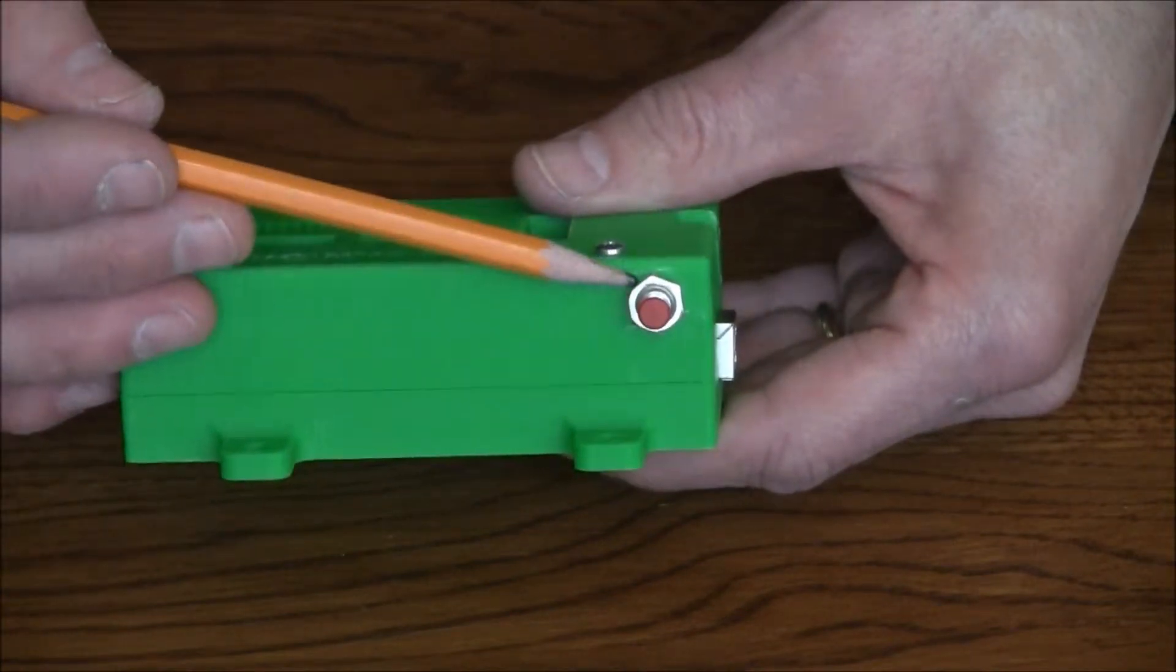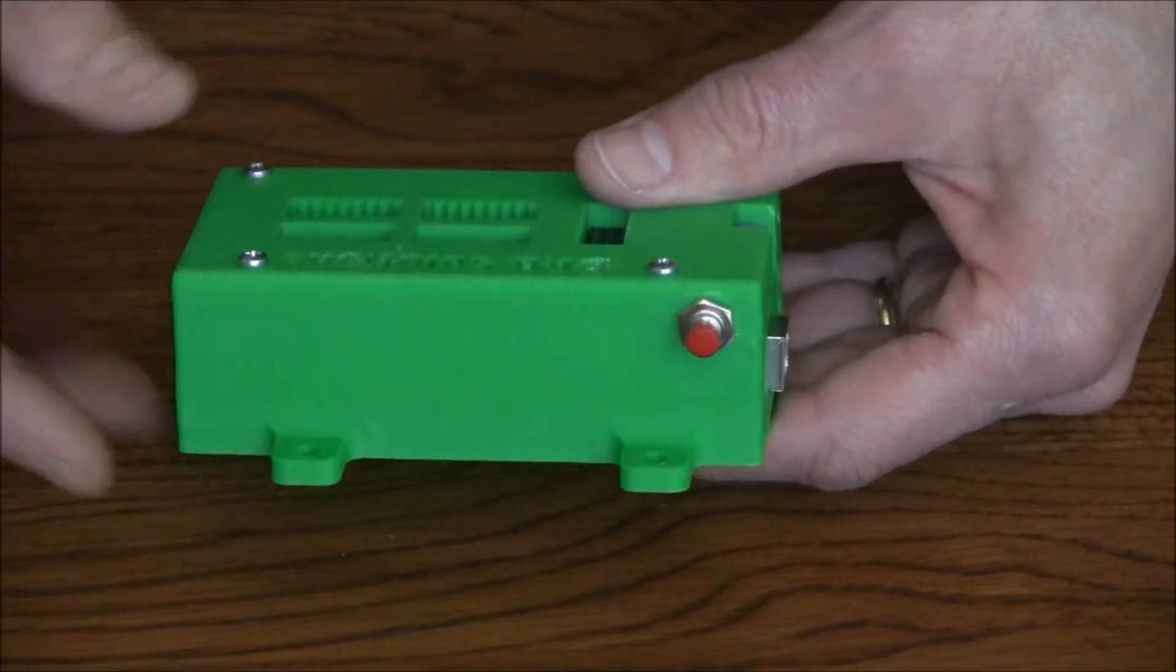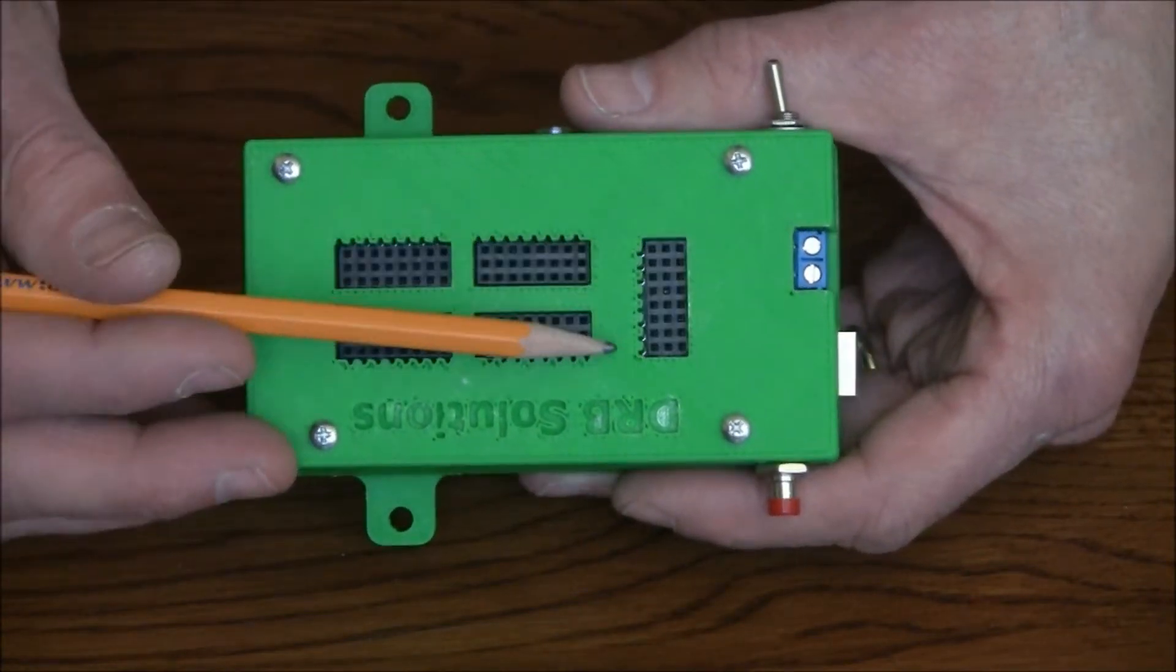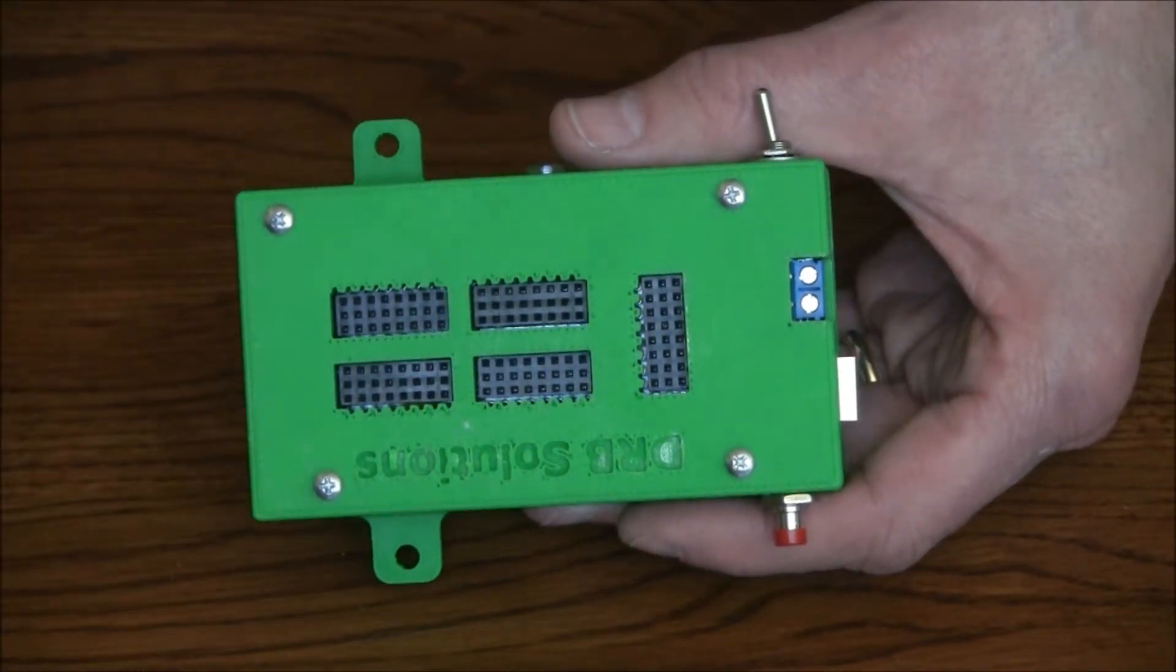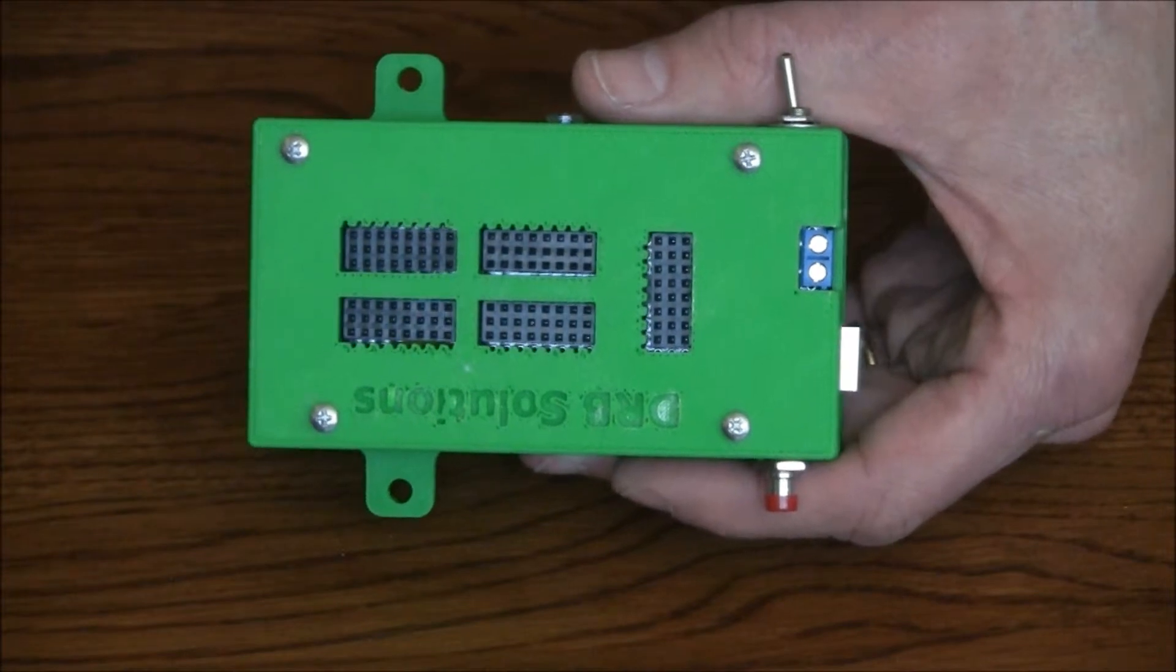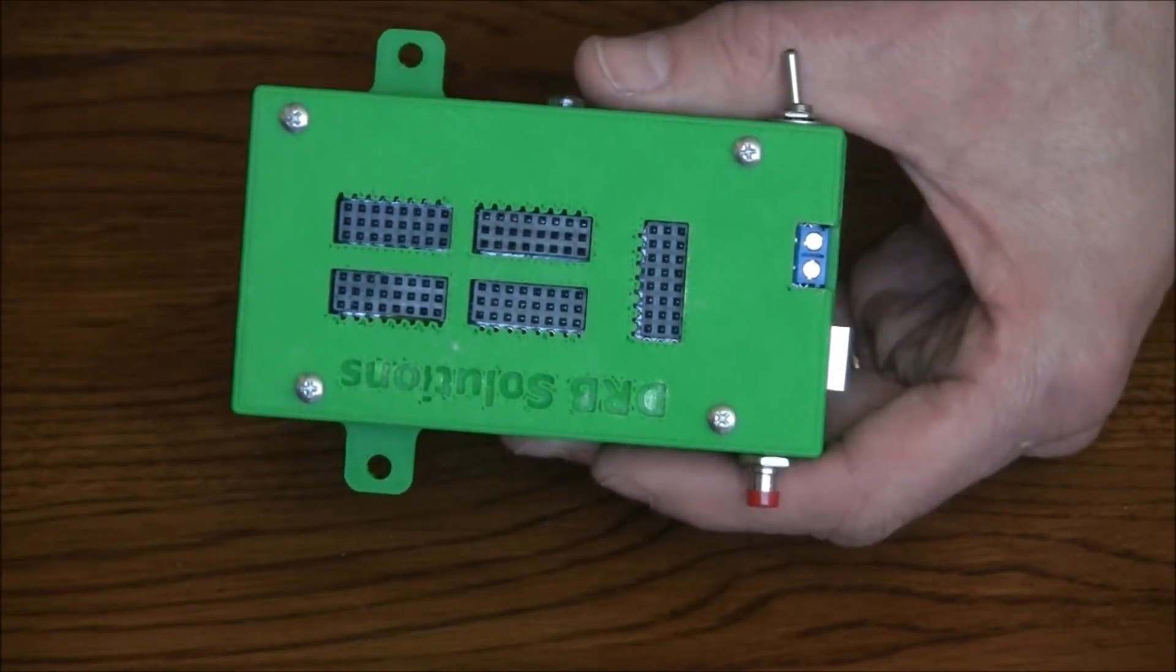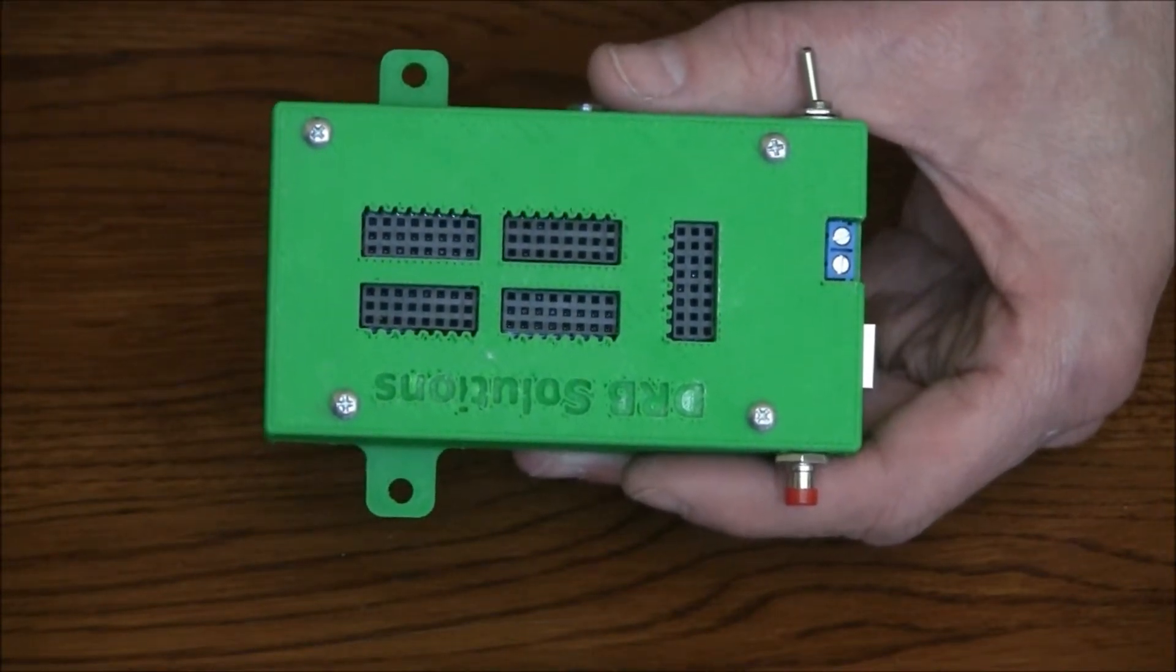And then on this side I have my reset switch for resetting my Arduino. You'll also notice that the connector openings have these little grooves or ridges in them. That is so they can accept the VEX connector as well as the more common servo cable connector.